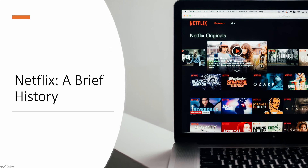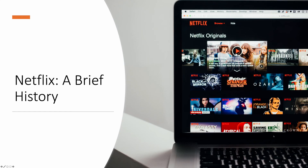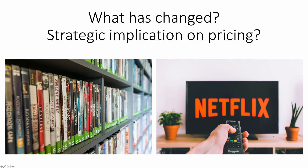Our final example is on Netflix. Netflix started in 1997 as a DVD rental company, and over the first decade, DVD rental was Netflix's bread and butter. Netflix would mail DVDs to customers with a prepaid envelope, and after customers watched the DVDs, they would return them by mail. Starting from 2008, Netflix began moving to the streaming business. With this transition from DVD rental to streaming, we ask two questions: first, what has changed, especially in terms of cost structure? And second, what are the strategic implications on pricing?